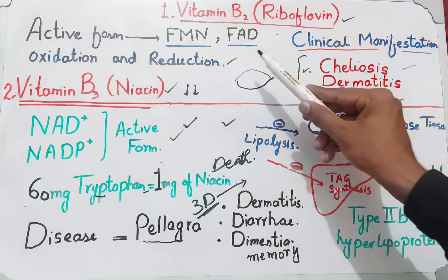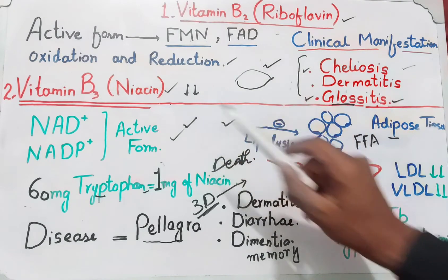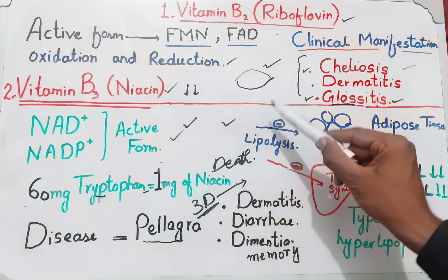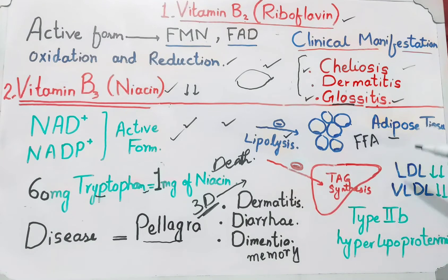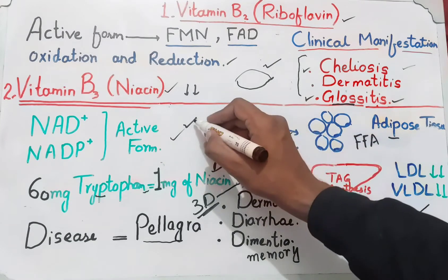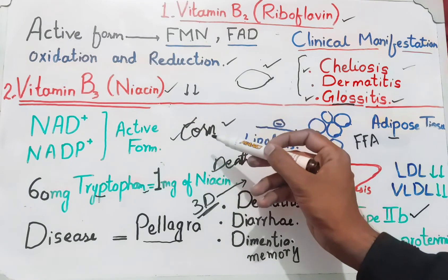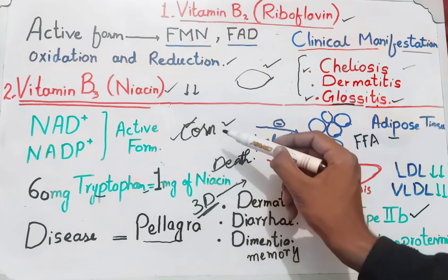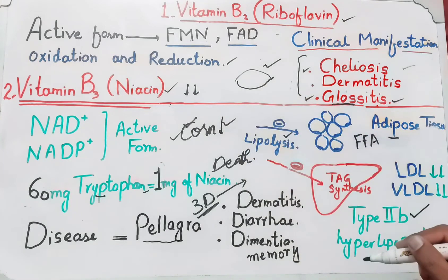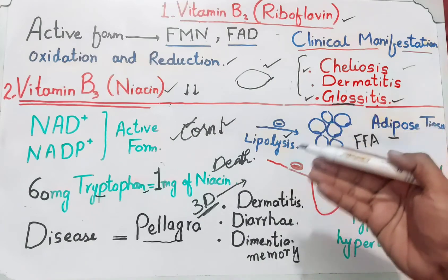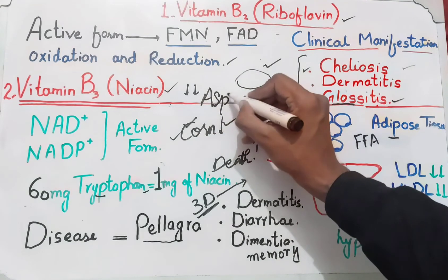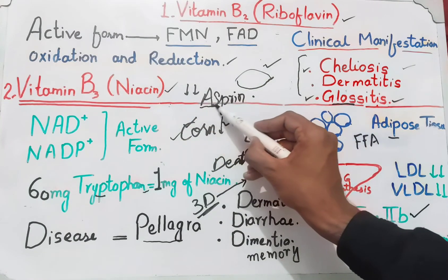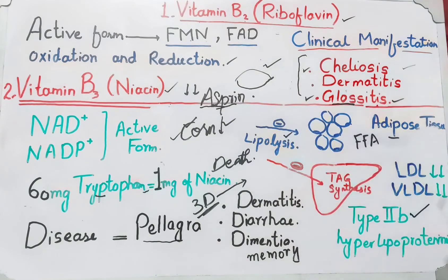In summary, we discussed vitamin B2 and its clinical manifestations, and vitamin B3 — with pellagra's 3 Ds and its lipid-lowering actions on adipose tissue and liver, decreasing LDL and VLDL for treatment of type 2b hyperlipoproteinemia. Additionally, a corn-based diet is deficient in tryptophan and niacin and can lead to pellagra. If a person is given niacin supplementation, a common side effect is flushing. To avoid flushing, aspirin is co-administered alongside niacin.